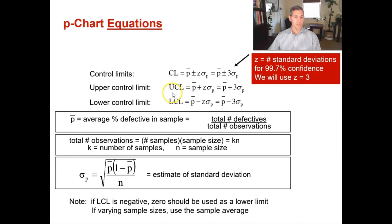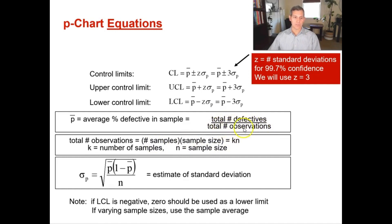To calculate your upper control limit, you use P-bar plus Z times the standard deviation of P. Your lower control limit is P-bar minus Z multiplied by the standard deviation of P. To get your total number of observations for your P chart, you multiply your number of samples (K) by your sample size (N), giving you K times N. K is your number of samples and N is your sample size.